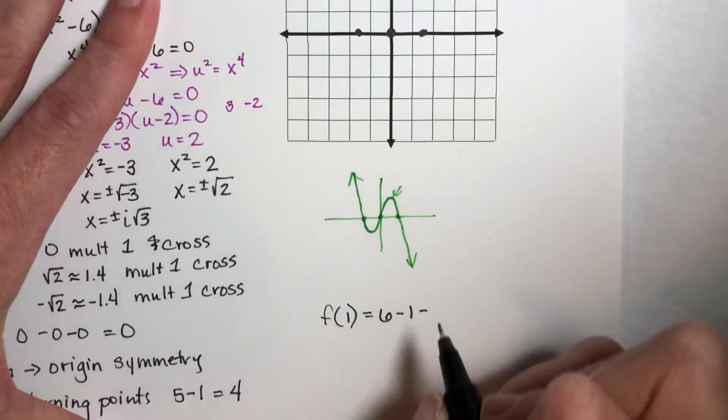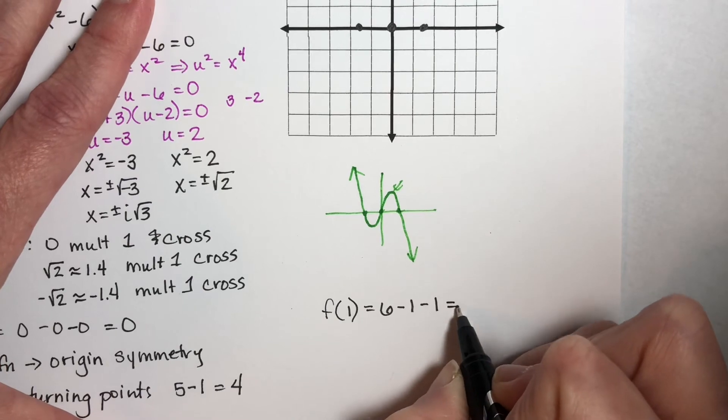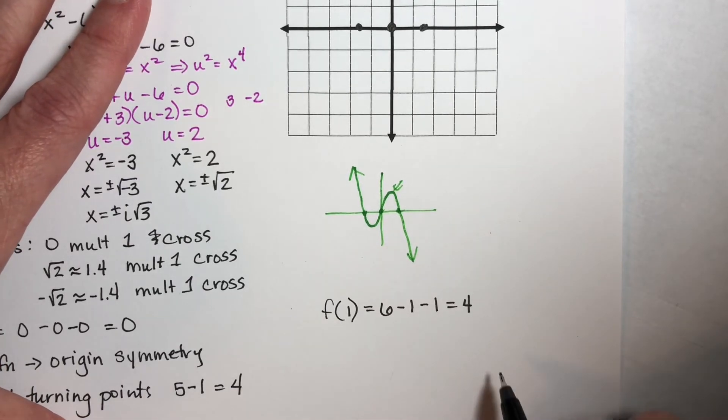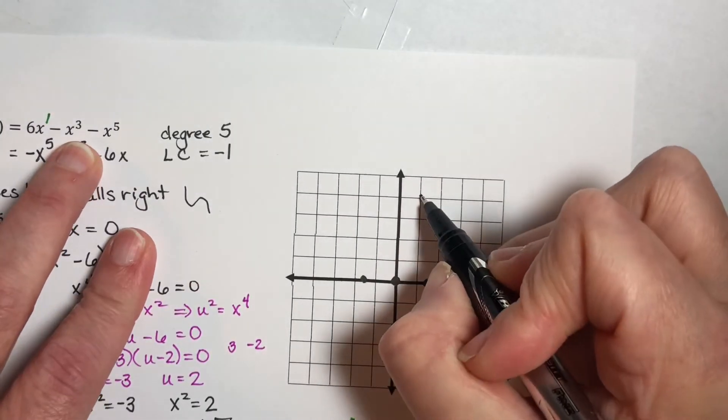Minus 1 to the fifth power, which is 1, so this is 4. So I have this point right up here.